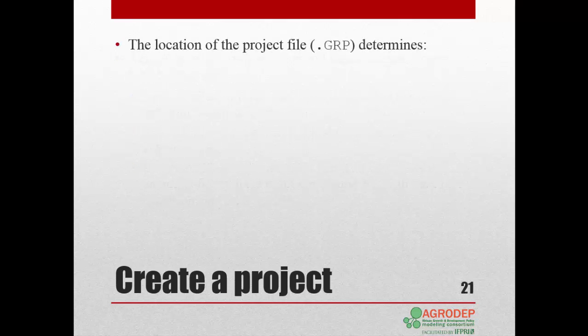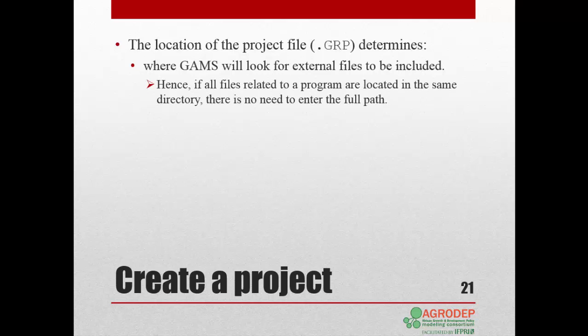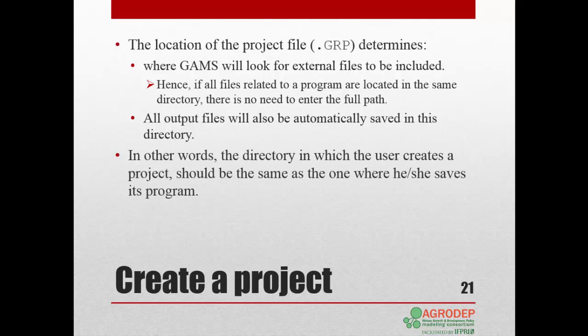The location of the project file determines where GAMS will look for external files to be included. So if all files related to a program are located in the same directory, there is no need to enter the full path. All output files will also be automatically saved in this directory. In other words, the directory in which the user creates a project should be the same as the one where he or she saves their program.